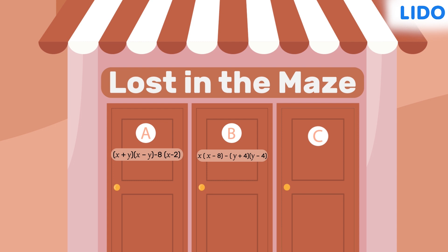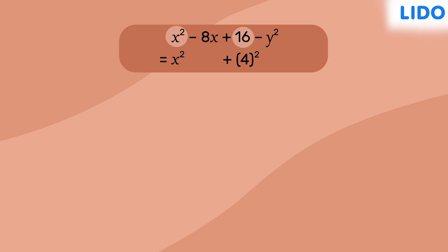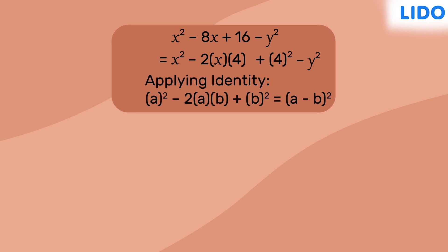Okay, let's give it one last shot, shall we? The first term, x², and the third term, 16, can be expressed as the squares of x and 4 respectively, and the term in the middle can be expressed as the product of 2, the term x, and the term 4. Wait — this is identical to the expansion of the identity (a − b)²!